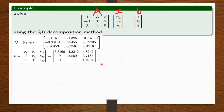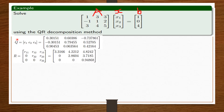Now that we know that our matrix A is equal to its decomposed form QR, we can say that AX equals B from the question. And since we have decomposed A into QR, then we can say that QR·X equals B.